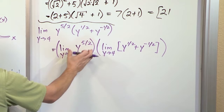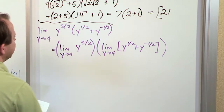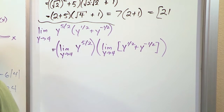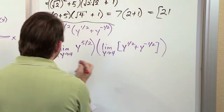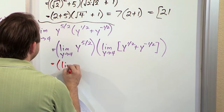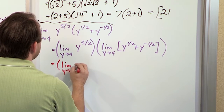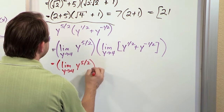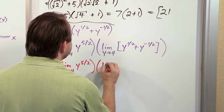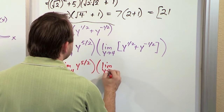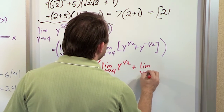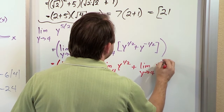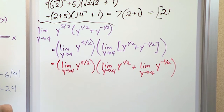So it'll be the limit as y approaches 4 of y to the 5 halves, times the limit as y approaches 4 of y to the 1 half plus y to the negative 1 half. All I've done is taken the limit of this one times the limit of this one. But then I realize, before I even do this limit, this second part is the sum of two functions. So I can further write it as the limit as y approaches 4 of y to the 5 halves, times the sum of two limits: limit of y to the 1 half plus limit of y to the negative 1 half. You're just using every little limit law along the way.